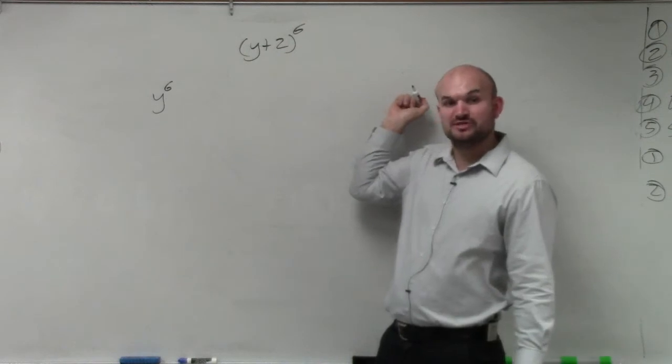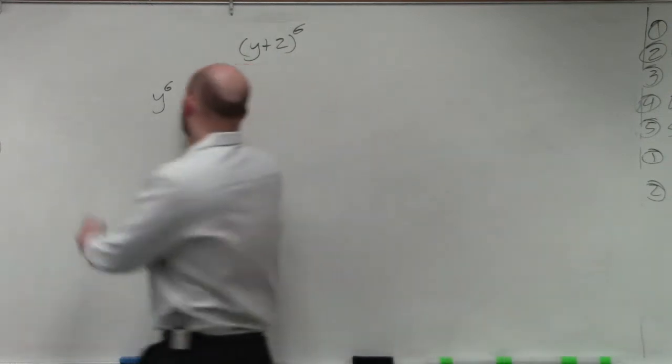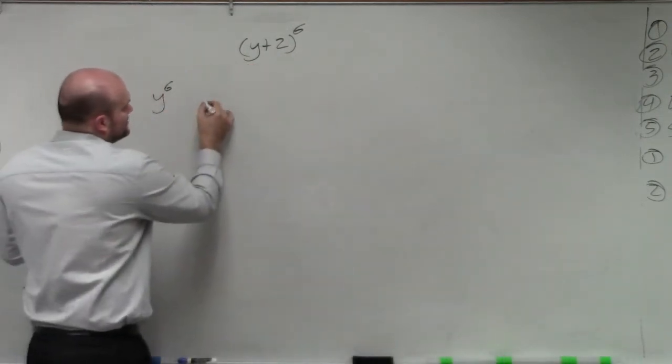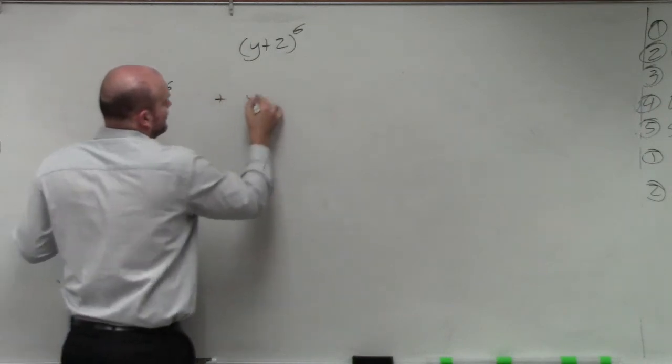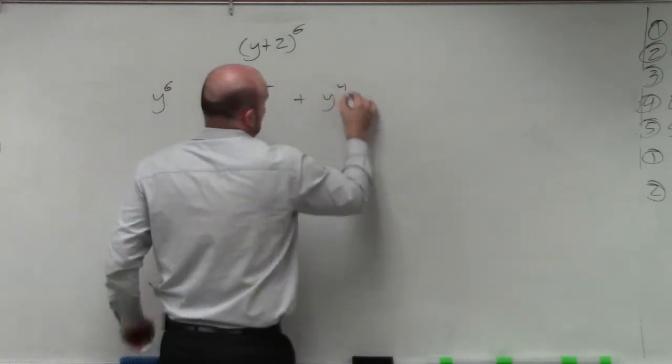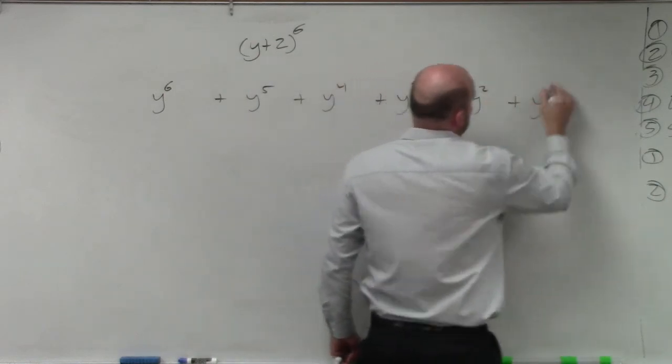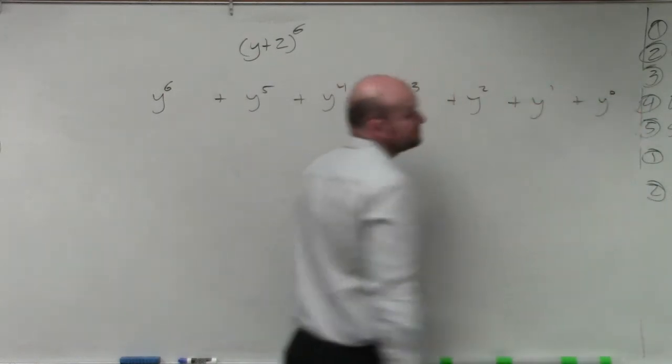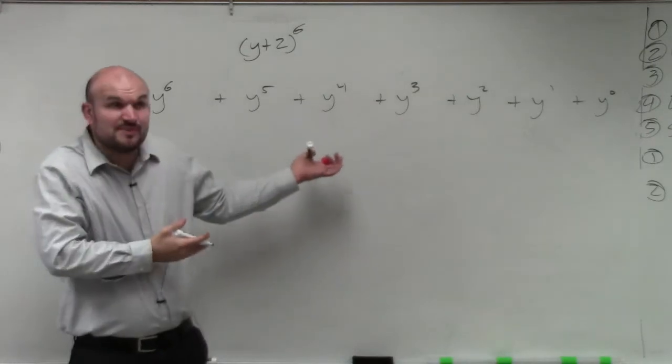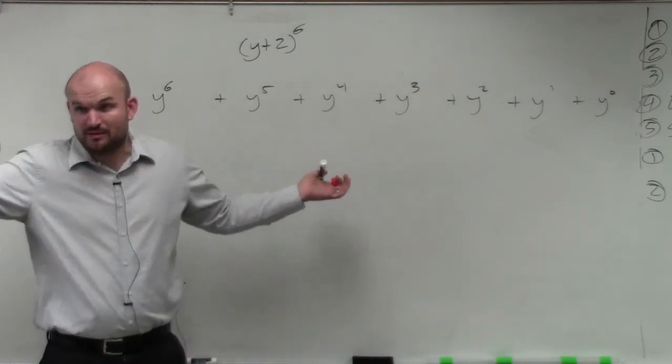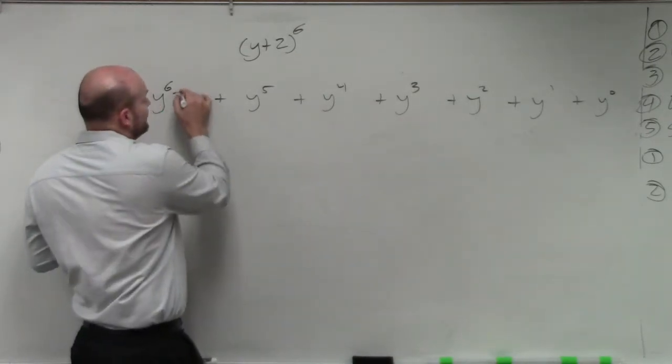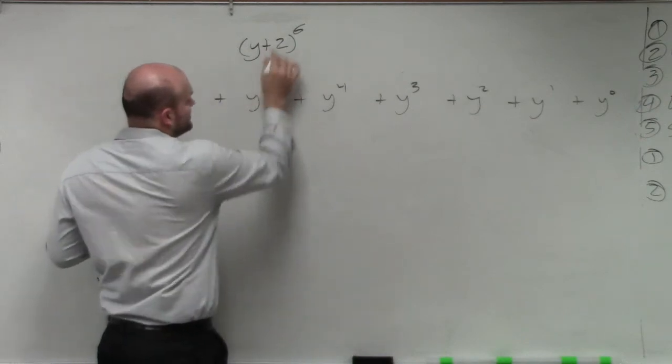And my last term is going to be 2 to the 6th power. No, I'm sorry. The last term over here will be 2 to the 6th power. So we are ascending. y to the 6th, y to the 5th, plus y to the 4th, plus y cubed, plus y squared, plus y to the 1st, right? I mean, that's basically your binomial expansion. That's how it's looked in every problem. And then you just go the other way with your second term.